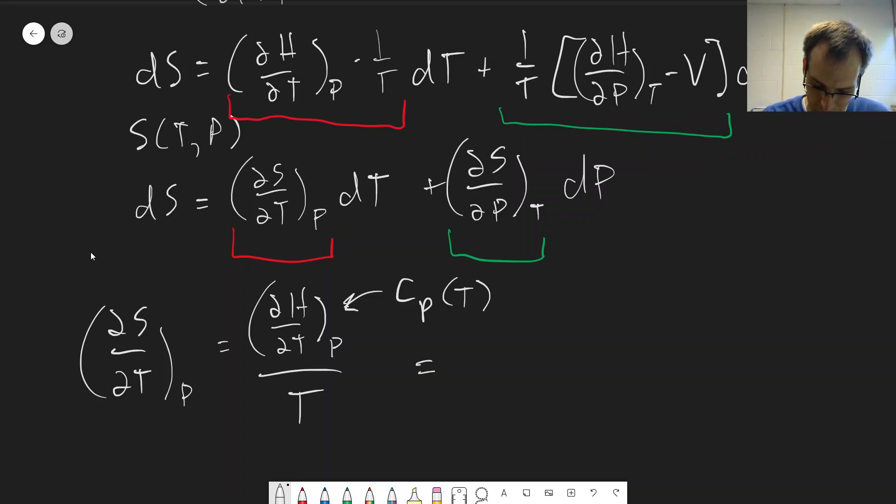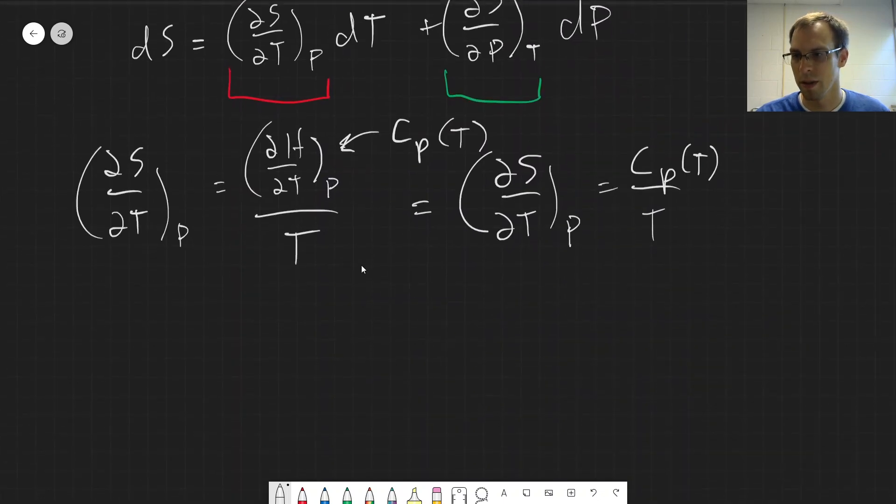But this gives us a way to calculate changes in entropy under a constant pressure. And constant pressure is something that is much easier for us to achieve experimentally. And so in practice, what we would need to do is we would need to measure the heat capacity as a function of temperature. And then we can integrate this.